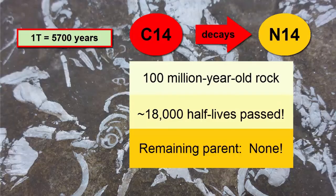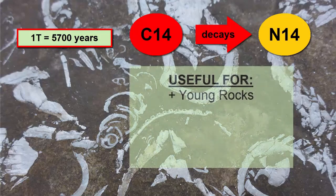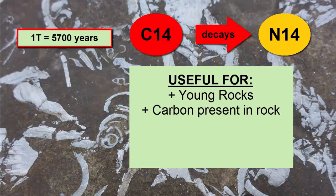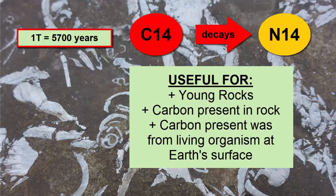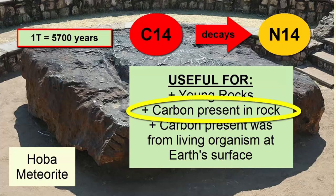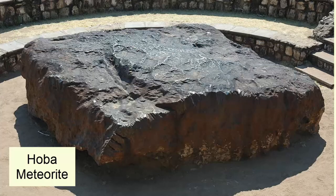In addition to the carbon-14 to nitrogen-14 pair being useful only for relatively young rocks, this pair is also useful only if there is carbon in the rock — and specifically carbon that was present in a living organism at some point on Earth's surface. While one half of all meteorites do contain some carbon, they fail on the other two requirements, and so we need to identify another radioactive decay pair to date meteorites.